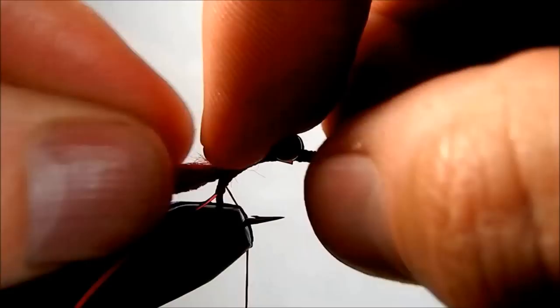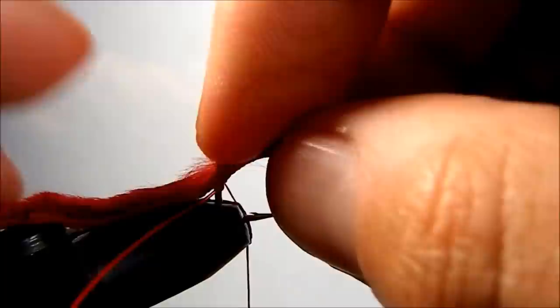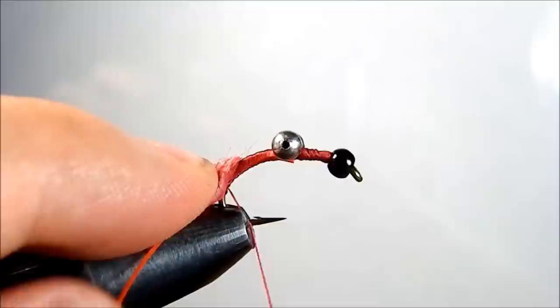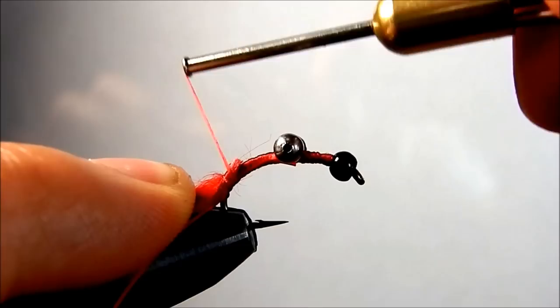Okay, so we're going to tie this on so that the grain of the fur runs backwards. And we're going to just tie in the very tip of that triangle taper.